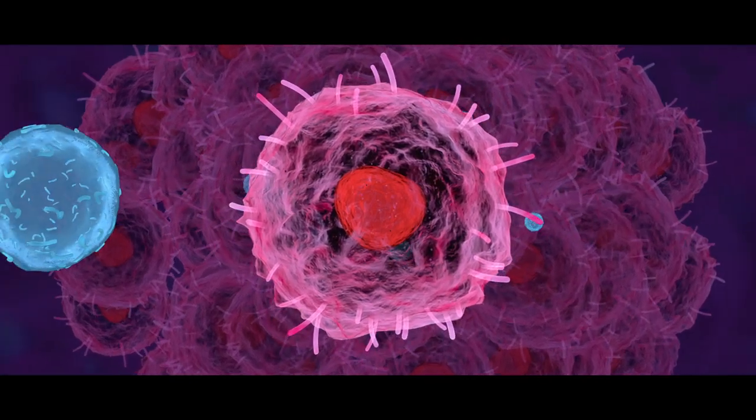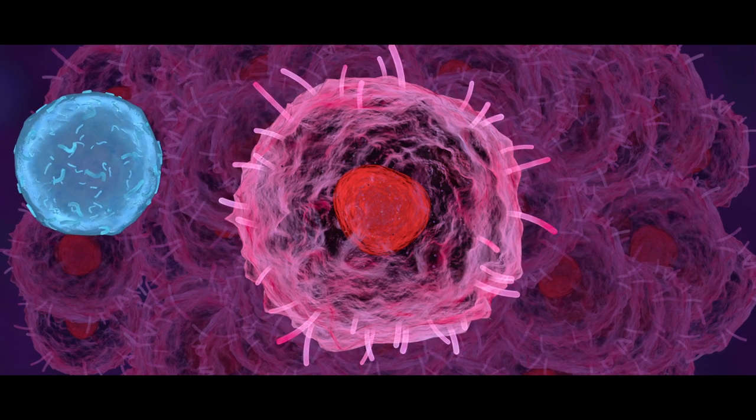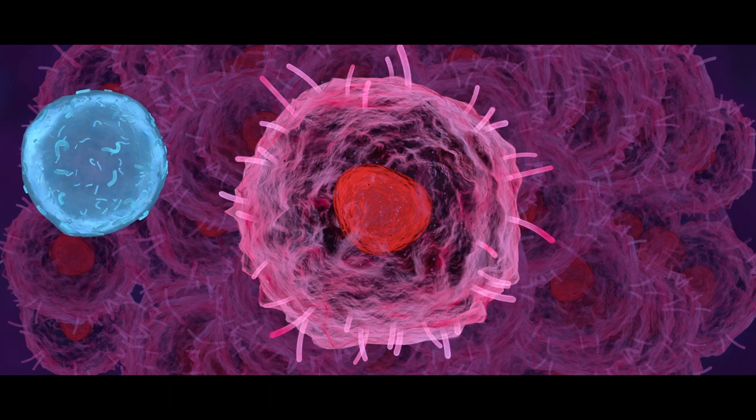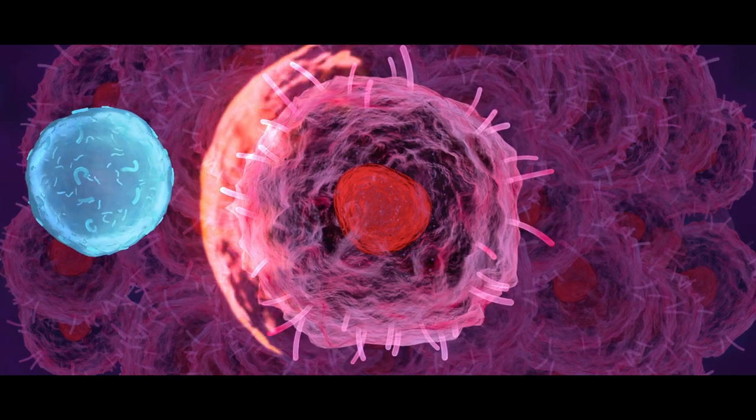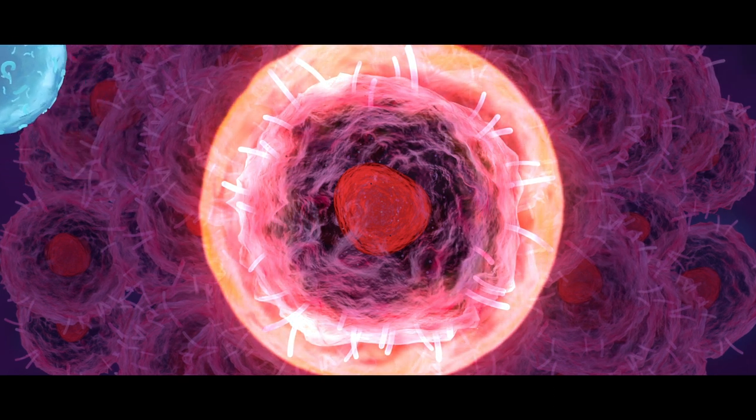Our immune cells have within them sort of emergency breaks called checkpoints. These checkpoints stop the immune cells from killing our body's own cells. Cancer cells take advantage of these checkpoints and shield themselves, tricking the immune system into believing that they are not abnormal and that they are not threatening.